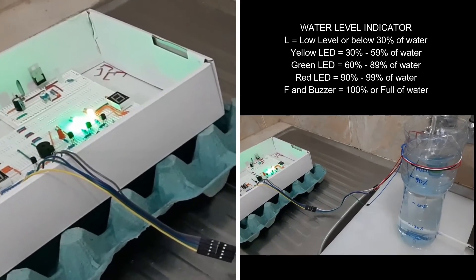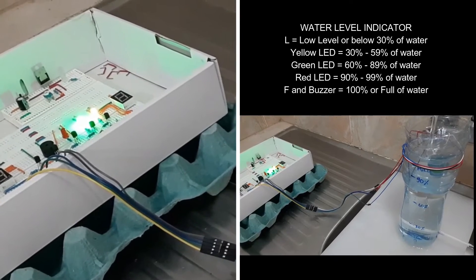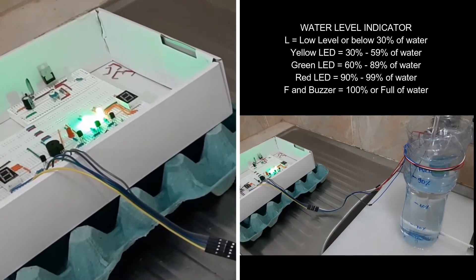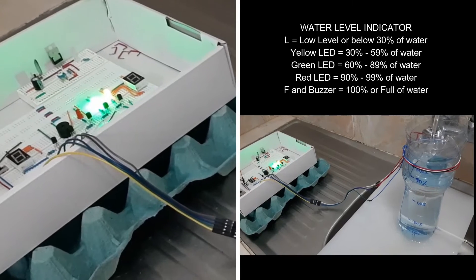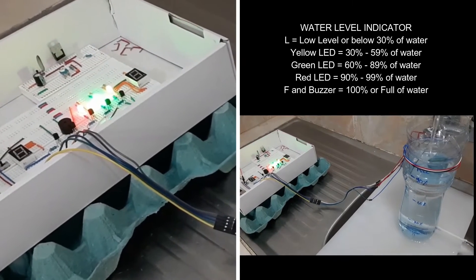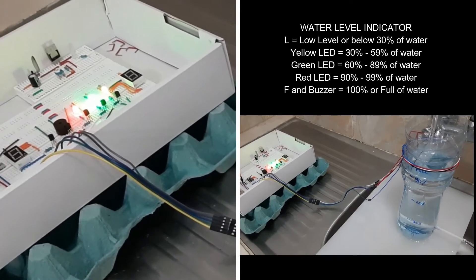When the water level reaches 90% up to 99%, the red LED will turn on. And when the water level reaches 100% or full, the letter F LED will turn on, and the buzzer will turn on.